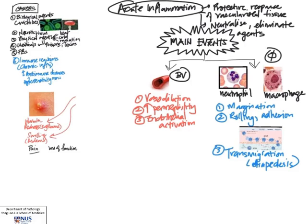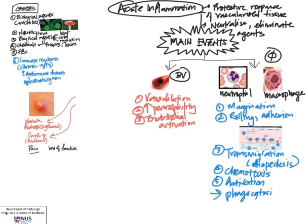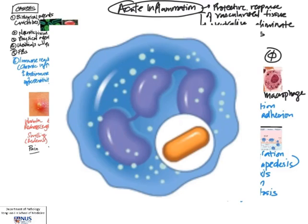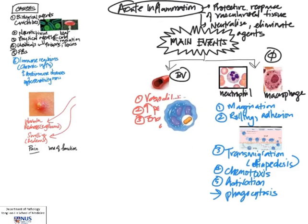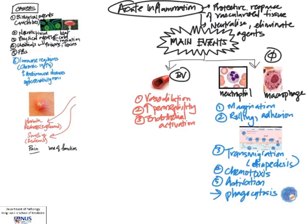The next step is chemotaxis — this is how the white blood cells actually travel to the localized site of injury, and this is an active process. Once they reach their destination, they become activated and phagocytose the offending agents. This is a very active process involving eating up the agent and releasing lysosomal enzymes to destroy it. This picture from Robbins shows a neutrophil that has phagocytosed a bacterium. The combination of vascular events and cellular events ultimately leads to two main outcomes.